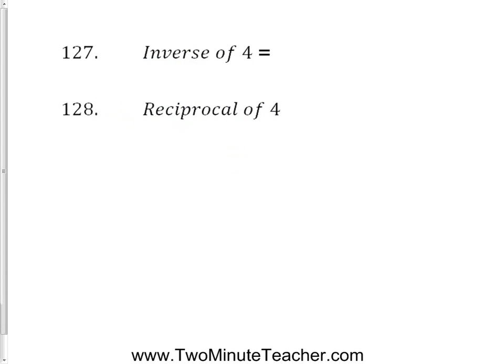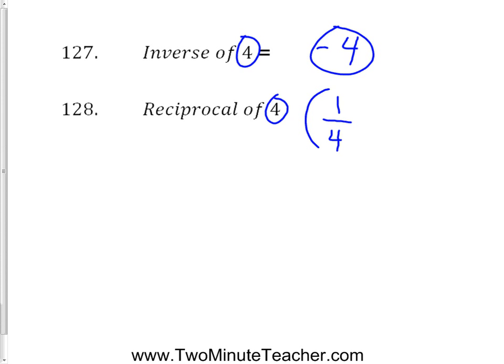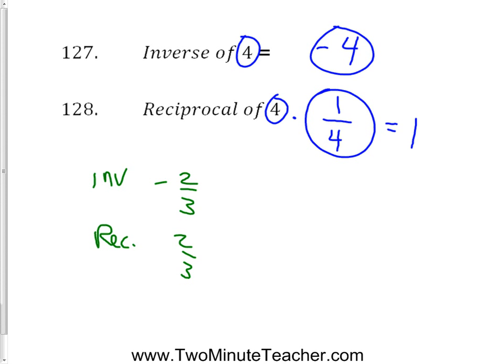Inverse of 4 versus reciprocal of 4 — it's easy to get these confused. The inverse of 4 is negative 4; inverses add up to zero. The reciprocal of 4 is 1/4; reciprocals multiply to equal 1. For example, the inverse of 2/3 is negative 2/3, and the reciprocal of 2/3 is 3/2 (you flip the fraction).